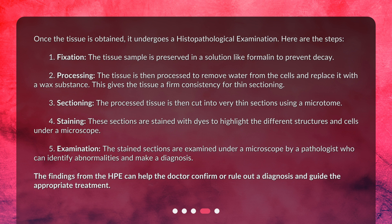3. Sectioning — the processed tissue is then cut into very thin sections using a microtome. 4. Staining — these sections are stained with dyes to highlight the different structures and cells under a microscope. 5. Examination — the stained sections are examined under a microscope by a pathologist who can identify abnormalities and make a diagnosis.